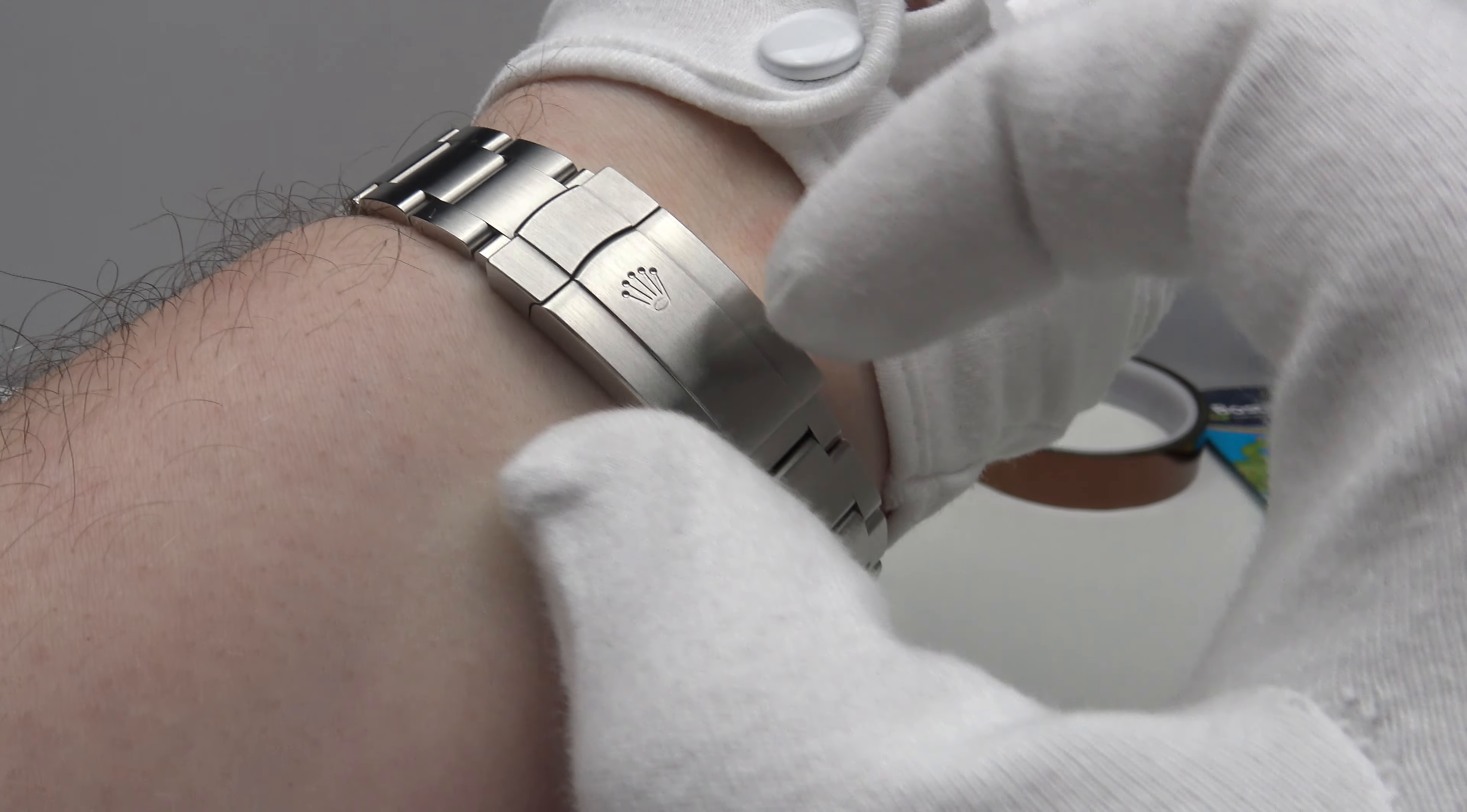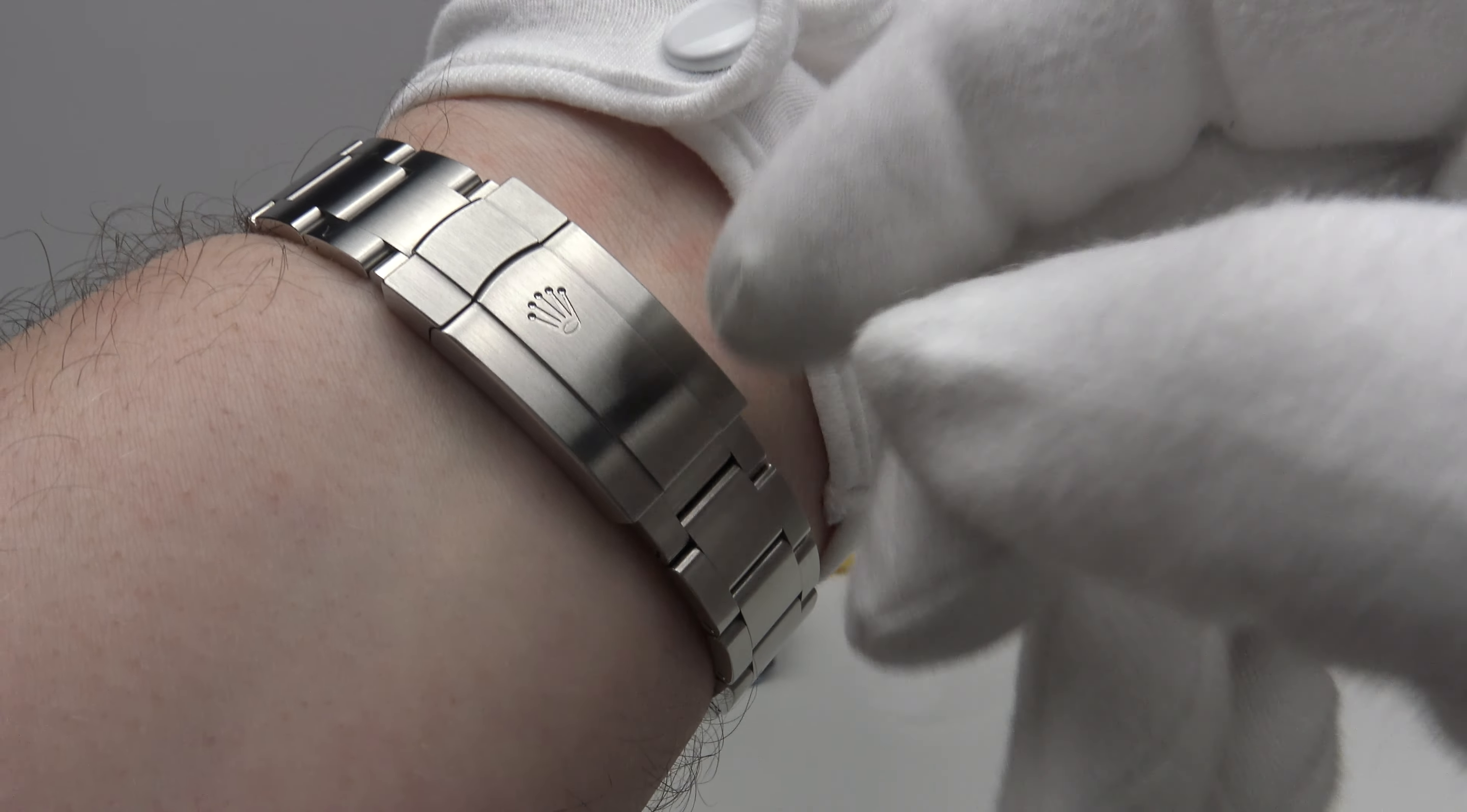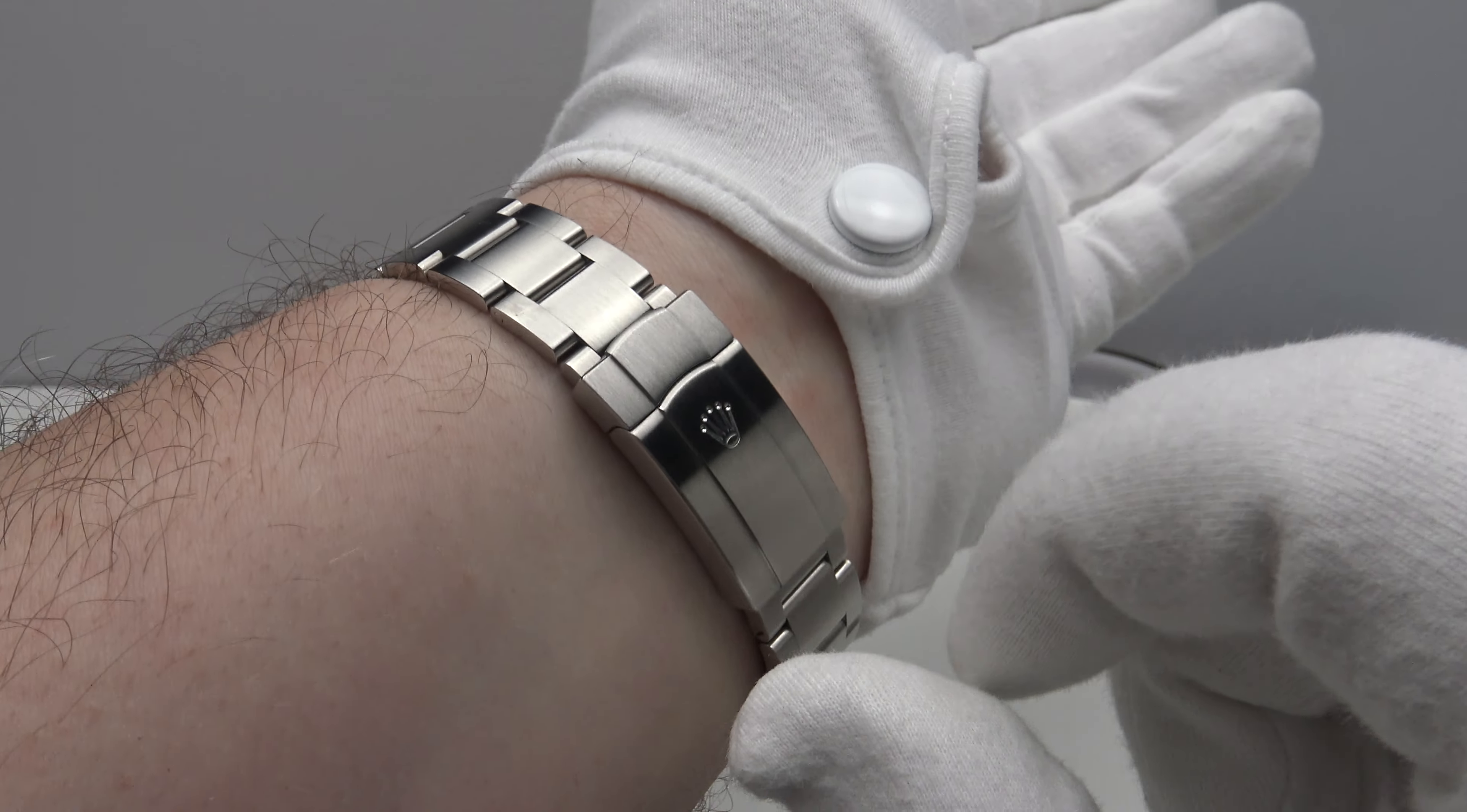So, that really negates the need for an easy link extension or alternatively a glide lock extension to adjust on the fly. If an oyster bracelet is sized correctly using the index finger method, one doesn't need to adjust the bracelet on the fly. That is the perfect sizing method.